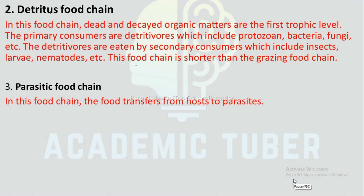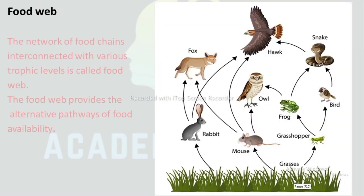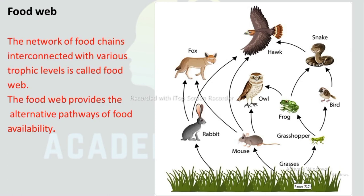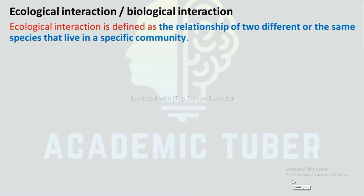Parasitic food chain: In this food chain, food transfers from host (first trophic level) to parasites (second trophic level). Food web: The network of food chains interconnected with various trophic levels is called a food web. The food web provides alternative pathways of food availability.